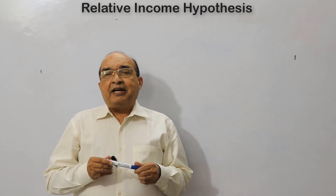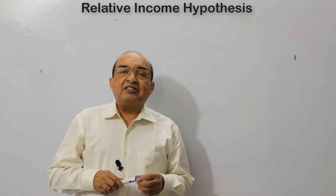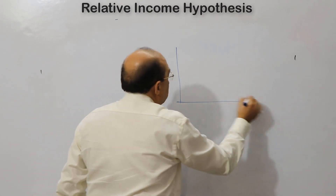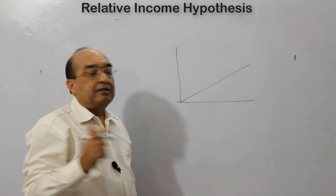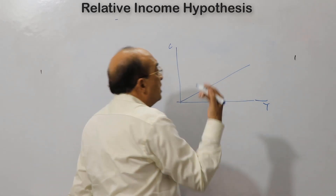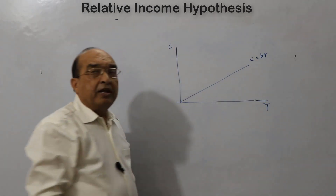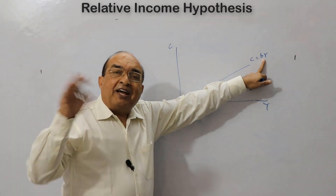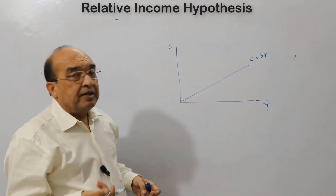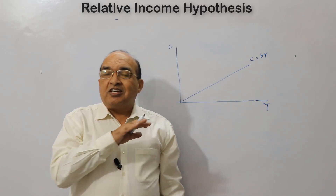The long-term time series data, when used to test the consumption hypothesis of Keynes, gave a consumption function of proportionality — that is, a consumption function that comes from the origin, where income is on the x-axis and consumption on the y-axis. This is C equals bY, where B is the marginal propensity to consume as well as the average propensity to consume, and both are the same because the function passes through the origin.